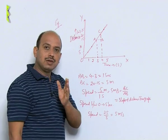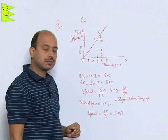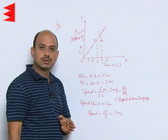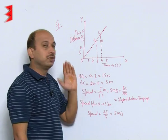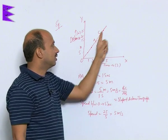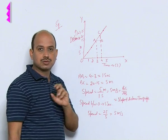Whatever time interval you take in this example, you will be getting speed remains constant. So for uniform motion graph is a straight line and speed remain constant.